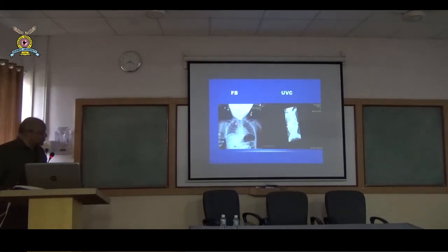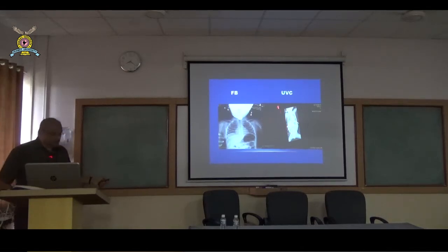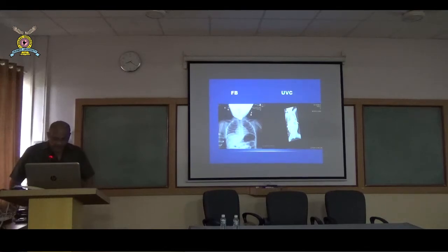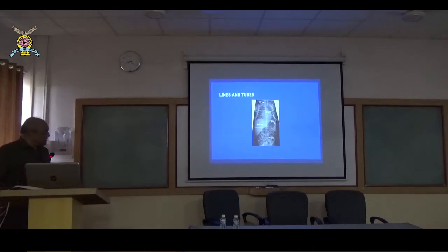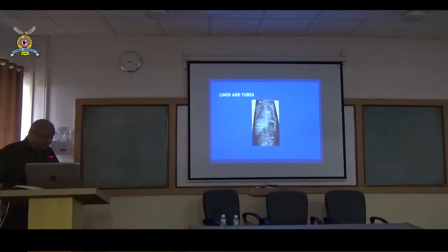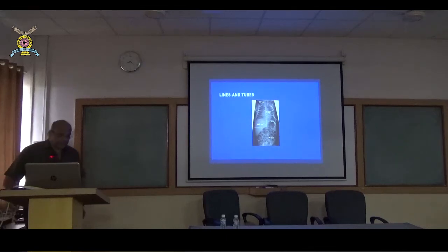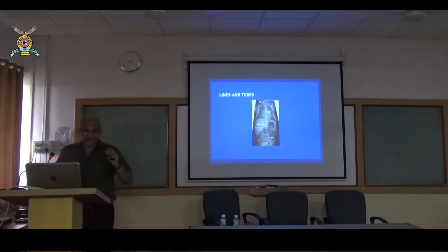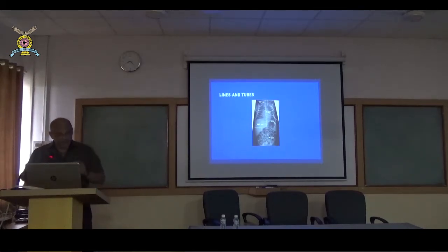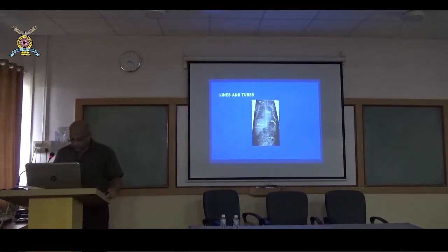Here we can see a foreign body — this will be in the esophagus, not in the trachea. We also need to see the various tubes and lines. Here is an umbilical vein catheter. The umbilical vein catheter should be in the umbilical vein extending into the portal vein. You can have an umbilical artery catheter going through the umbilical arteries into the aorta. There is also a nasogastric tube in the stomach. The position of all these tubes and lines should be ideal; incorrect positioning causes iatrogenic problems.